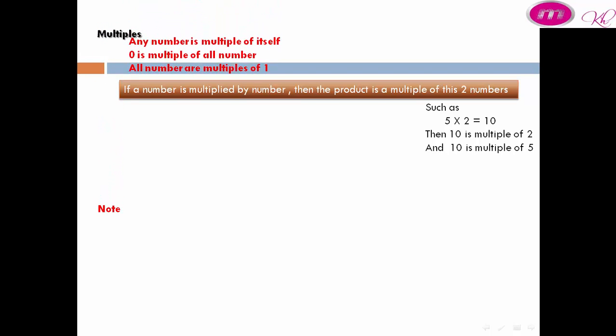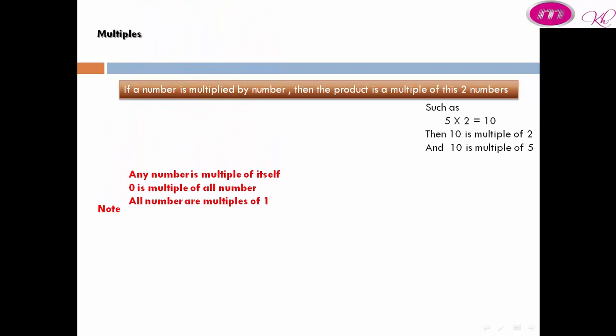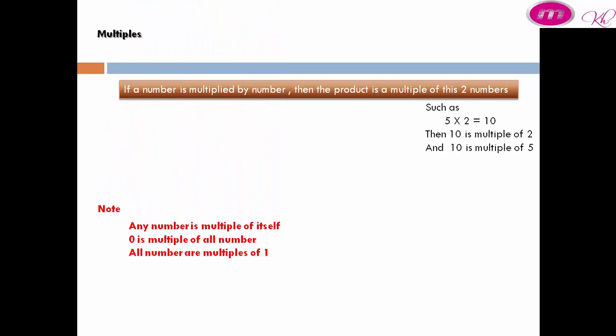Note: any number is a multiple of itself. Zero is a multiple of all numbers. All numbers are multiples of 1.